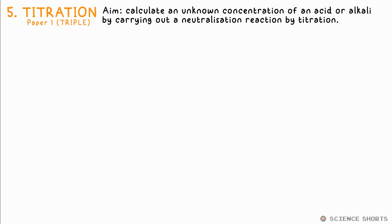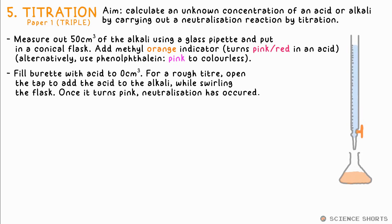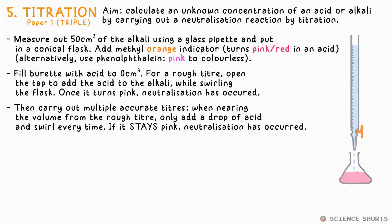Chemistry 5: Titration. We can carry out a titration to determine the concentration of an acid if we know the concentration of the alkali it's neutralising, or vice versa. We use a glass pipette to measure out a specific volume of the alkali and put it in a conical flask, then add an indicator like methyl orange, which turns pink in the presence of an acid. We fill the burette up to the 0 cm³ mark at the top and open the tap. You can do a rough titration first by adding the acid quickly while swirling the flask. Once it turns pink, you know the alkali has been neutralised — you've likely overshot, but this gives you an idea of the volume needed. Repeat the process, but close the tap so the acid is only added a drop at a time when you get close to the volume from your rough titer.